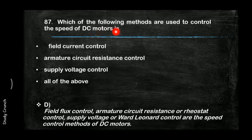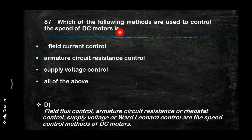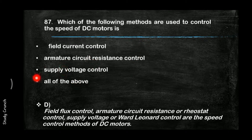Which of the following methods are used to control the speed of a DC motor? The answer is all of the above — field current control, armature circuit resistance control, and supply voltage control can all be used, so the answer is D.